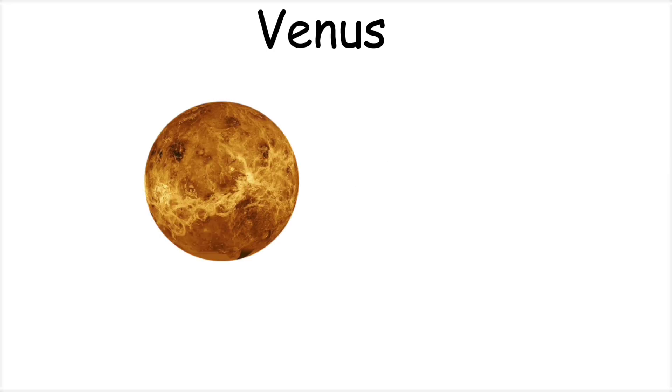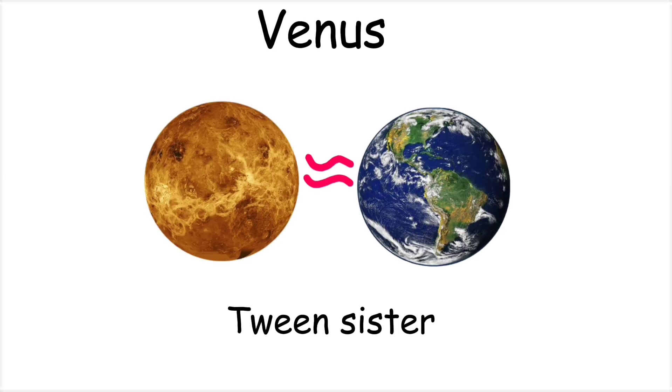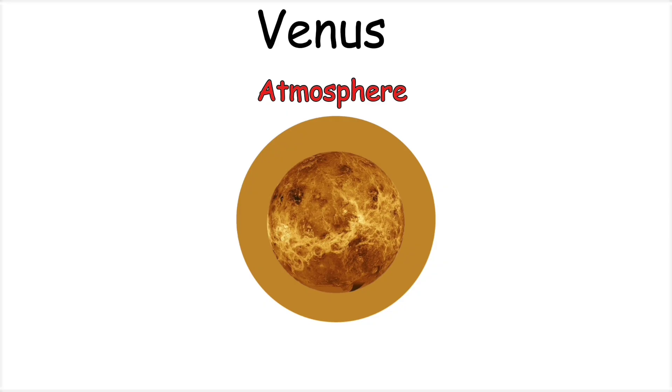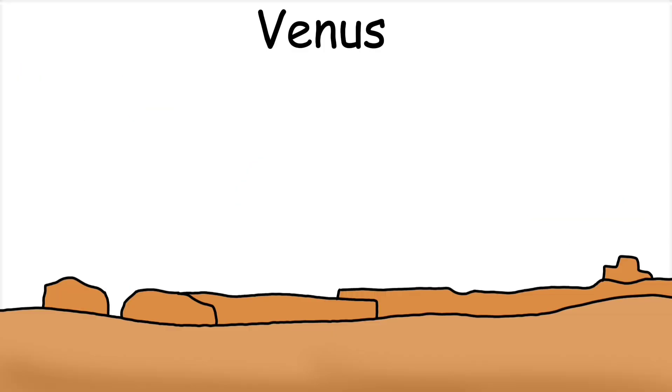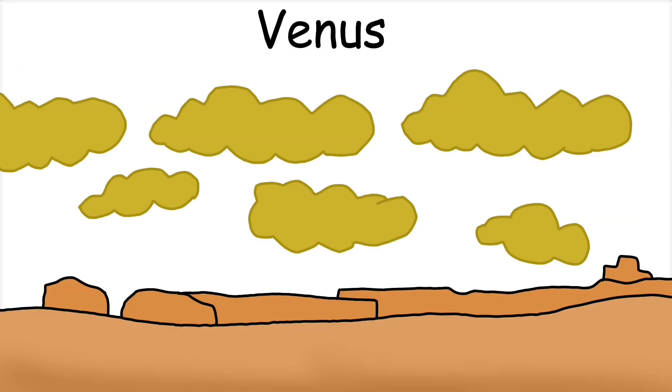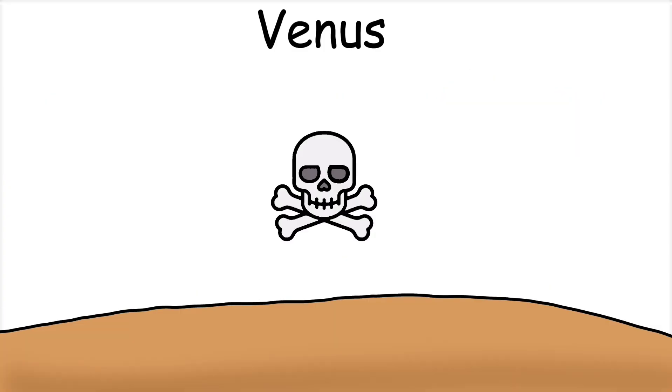Venus is called Earth's twin sister because it is almost the same in size and gravity. Its atmosphere is very thick and made up of carbon dioxide, which allows only about 10 to 15% of sunlight to reach the surface. The planet is covered with clouds of sulfuric acid. Its surface temperature reaches around 460 degrees Celsius. The soil is toxic, and there is also a lack of water, making life here impossible.